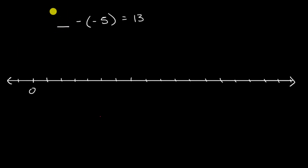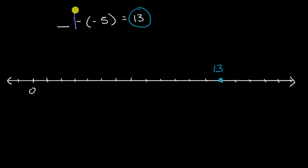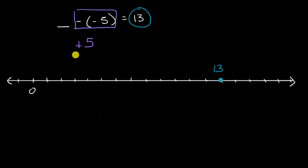We don't know where we're starting — we know we want to end up at 13. So 13 is right over here. Now, we are subtracting a negative five. As I just mentioned, subtracting a number is the same thing as adding the inverse of the number. So this is the same thing as adding positive five. Either way, you're starting someplace and going five units to the right to end up at 13.